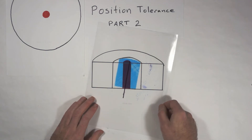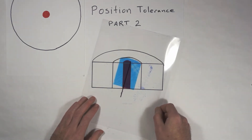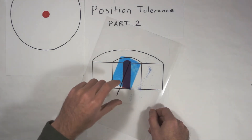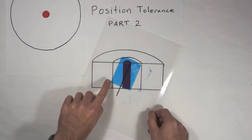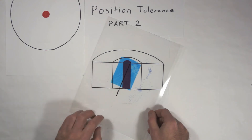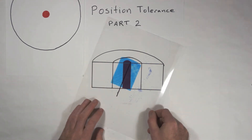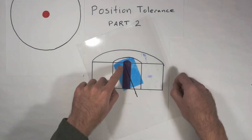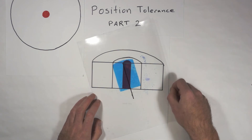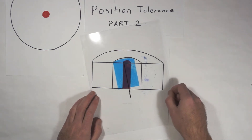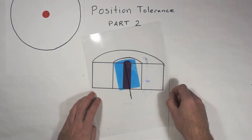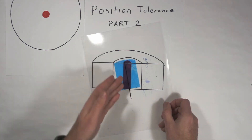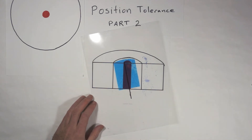We can angle this thing — if I start to come outside of my bullseye that now has depth, my feature starts to violate that virtual condition boundary. Same thing on this side, or if I come out on the top, it starts to violate that boundary. It's important that the center line of our feature stays within that bullseye for the full depth, because that depth covers the whole feature.